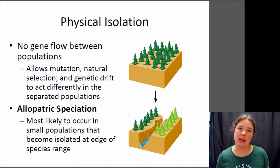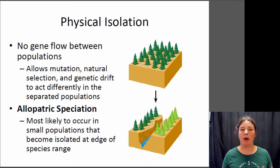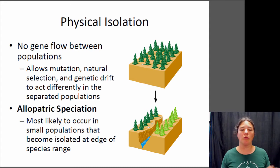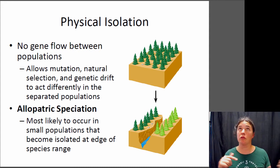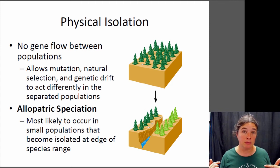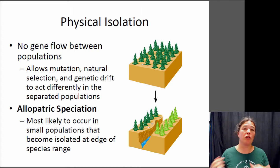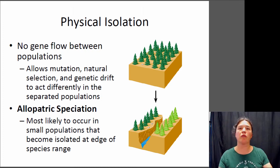The most common type of isolation within populations is some sort of physical isolation — a physical barrier that prevents individuals from moving back and forth. If you don't have individuals moving back and forth, the evolutionary mechanism we're preventing is gene flow. So you have to have some barrier to gene flow preventing individuals from moving between the populations.